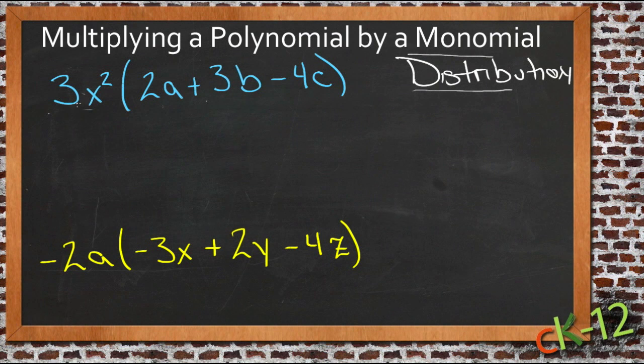So what we're going to do here is start with 3x squared. We're going to multiply that by the expression 2a plus 3b minus 4c and we're going to distribute the 3x squared to each of those terms individually. So we start with the 3x squared and we multiply it by 2a.